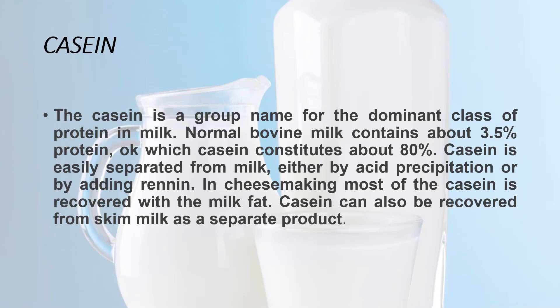Next, let's talk about casein. Casein is a group name for the dominant class of protein in milk. Normal bovine milk contains about 3.5% protein, of which casein constitutes about 80%. Casein is easily separated from milk either by acid precipitation or by adding rennet. In cheesemaking, most of the casein is recovered with the milk fat. Casein can also be recovered from skim milk as a separate product.